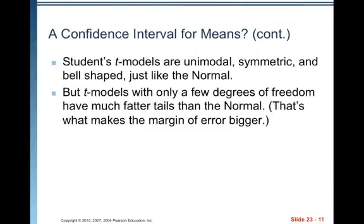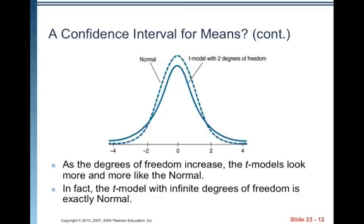Student's t models are unimodal, symmetric, and bell-shaped just like the normal model, but t models with only a few degrees of freedom have much fatter tails than the normal — that's what makes the margin of error bigger. Here, the dashed curve is the standard normal curve, and the solid curve is a t model with two degrees of freedom — you can see it's got fatter tails. As degrees of freedom increase, the t model looks more and more like the normal. In fact, the t model with infinite degrees of freedom is exactly normal.